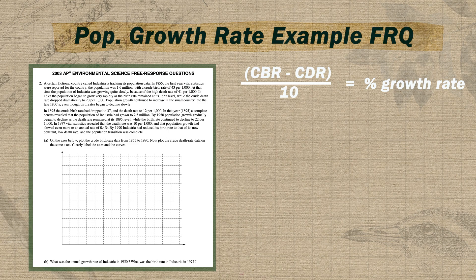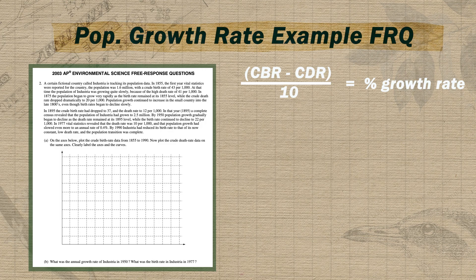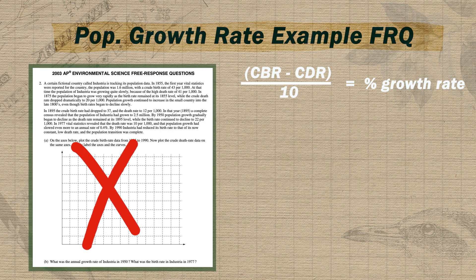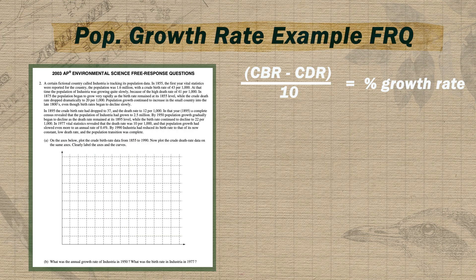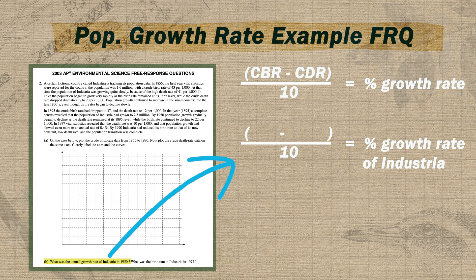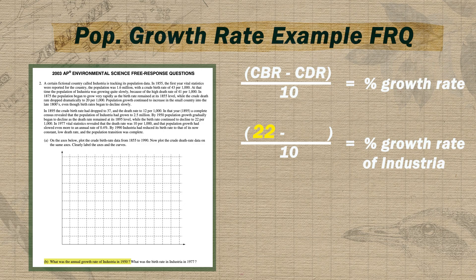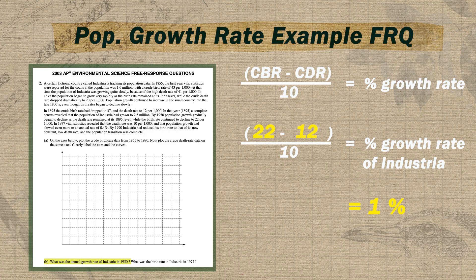Let's look at an example from the 2003 APES exam FRQ. I know none of you were even born then, but they were giving APES exams back then. Don't panic — APES exam FRQs have gotten significantly more straightforward since then; you won't be asked to create graphs or sift through 500 numbers in a huge paragraph. But in question B, we're asked to calculate the annual growth rate of the made-up country of Industria in 1950. Plugging in a CBR of 22 and a CDR of 12, the Industria population growth rate is 1% in 1950. There are tons of extra practice questions for population growth rate in the ultimate review packet.